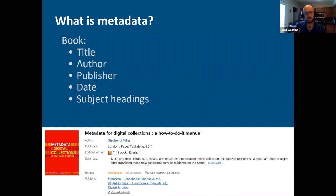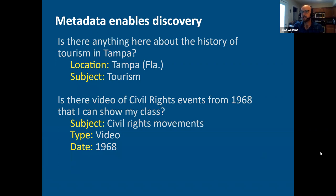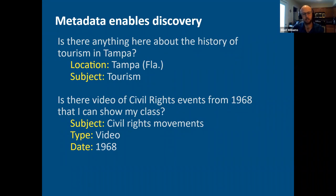There are some important differences between library cataloging and the digital collections metadata we're discussing today. If you're used to MARC cataloging, I caution people not to try to replicate that exactly for digital collections, though the ideas are similar. When thinking about metadata, it's really important to think about how the user is going to find it and what it's going to let them do. Think about: is there a unique story you're trying to tell? Why might someone be interested in this item?